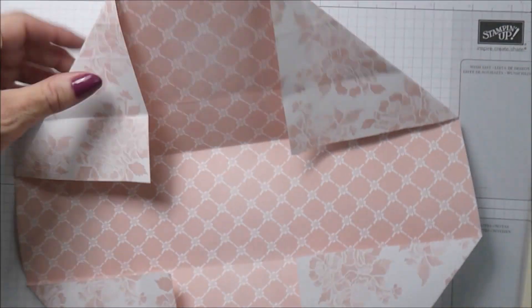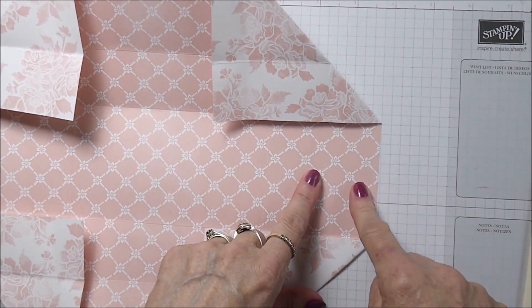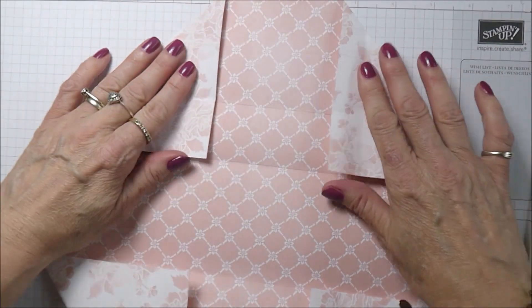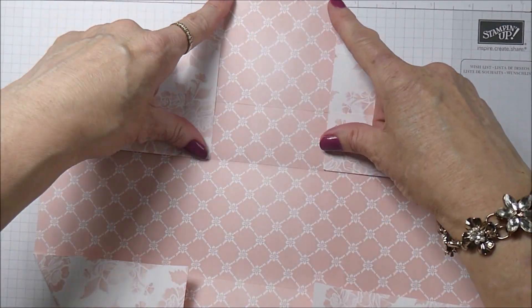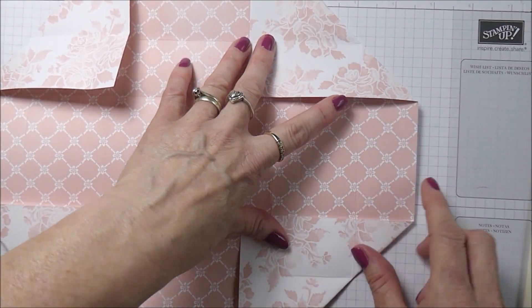Then you've got two further score lines on each side, so again just folding my paper gently, very lightly burnishing. The thing about this paper is it's such a beautiful thick quality, so it kind of fights with you a little.